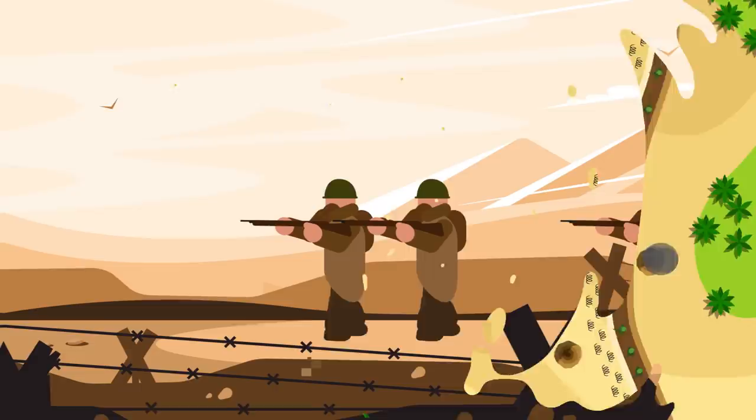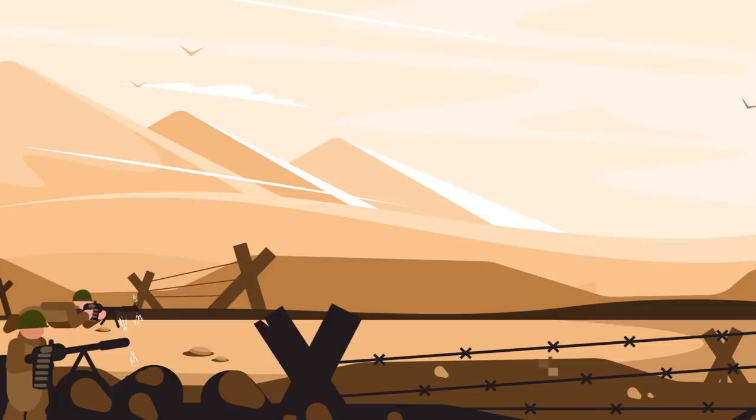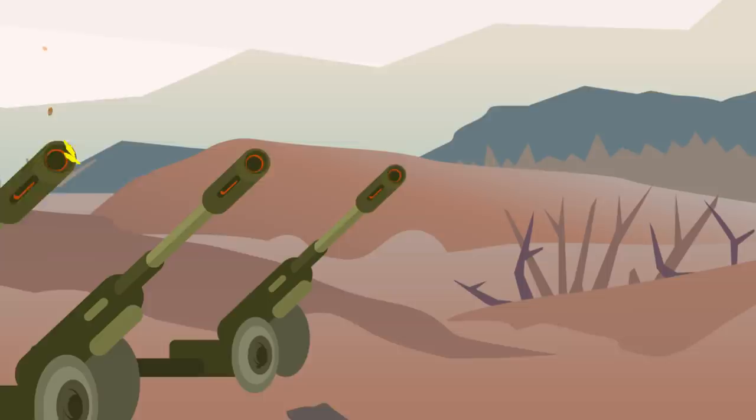On one side of the trenches a host of whistles signals a fresh attack. With a mighty roar, men leap up from their trenches and rush across no man's land, machine guns greeting the fresh offensive. Men fall by the scores and within moments artillery joins in the slaughter, the big guns reaching out across both sides.